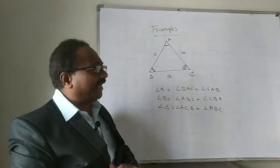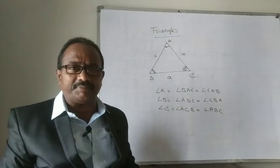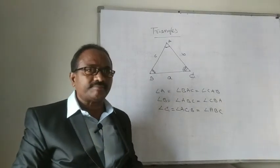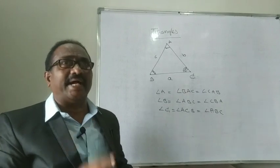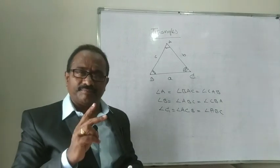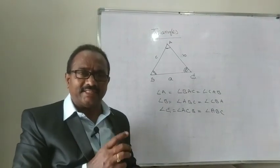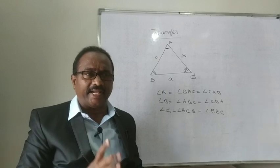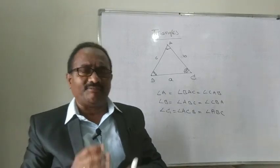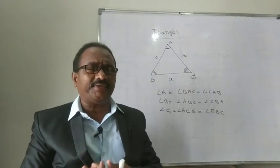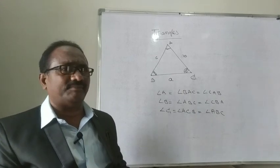When we discuss triangles, we have six types in total — three types with respect to sides and three types with respect to angles. Before that, let us understand what is an acute angle, what is an obtuse angle, and what is a right angle.